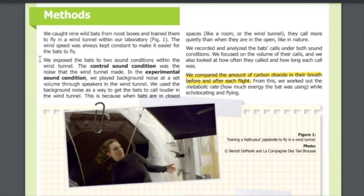We exposed the bats to two sound conditions within the wind tunnel. The control sound condition was the noise that the wind tunnel made. In the experimental sound condition, we played background noise at a set volume through speakers in the wind tunnel. We used the background noise as a way to get the bats to call louder in the wind tunnel. This is because when bats are in closed spaces like a room or the wind tunnel, they call more quietly than when they are in the open, like in nature.